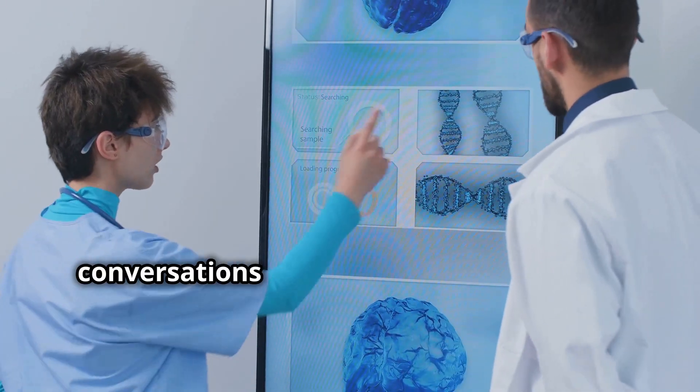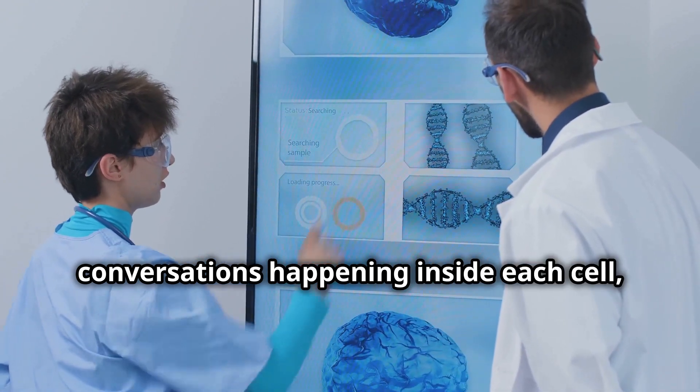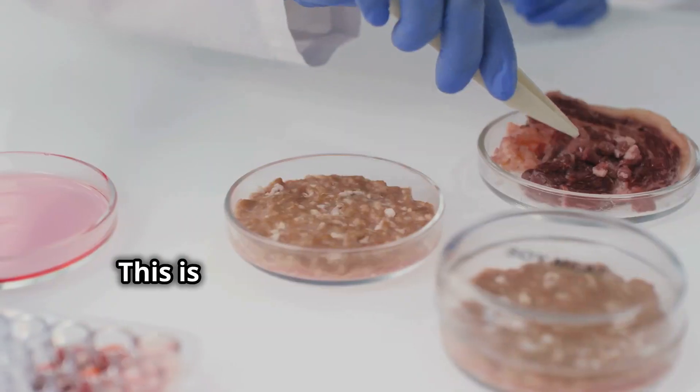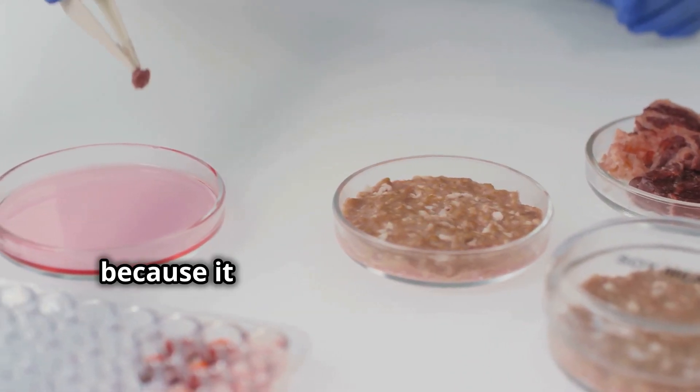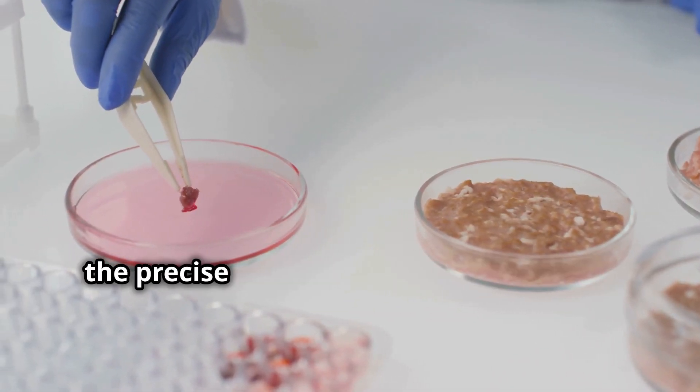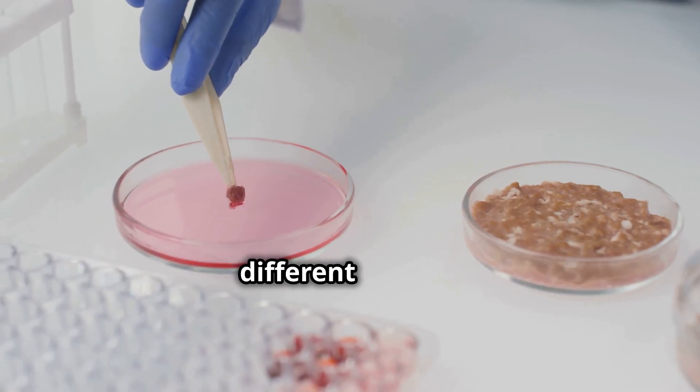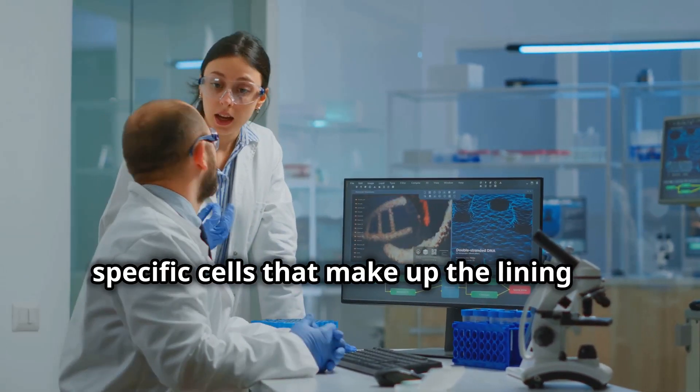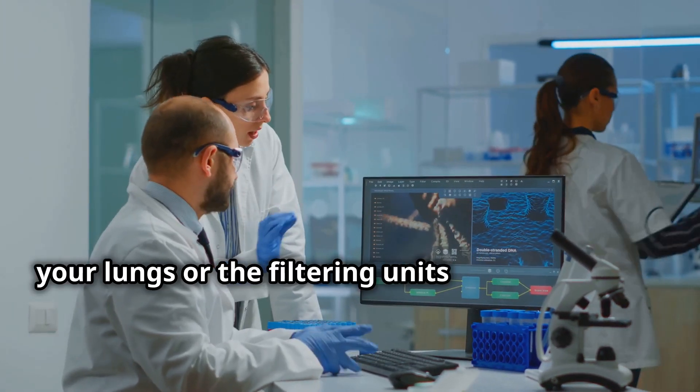That's what scRNA-seq does. It's like eavesdropping on the conversations happening inside each cell, giving us a detailed understanding of its unique identity and function. This is huge for organ development because it allows scientists to identify the precise types of cells needed to build different organs. We're talking about identifying the specific cells that make up the lining of your lungs or the filtering units of your kidneys.